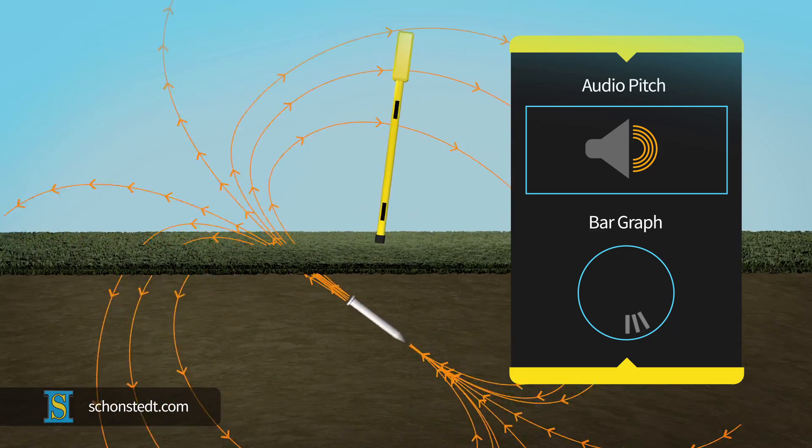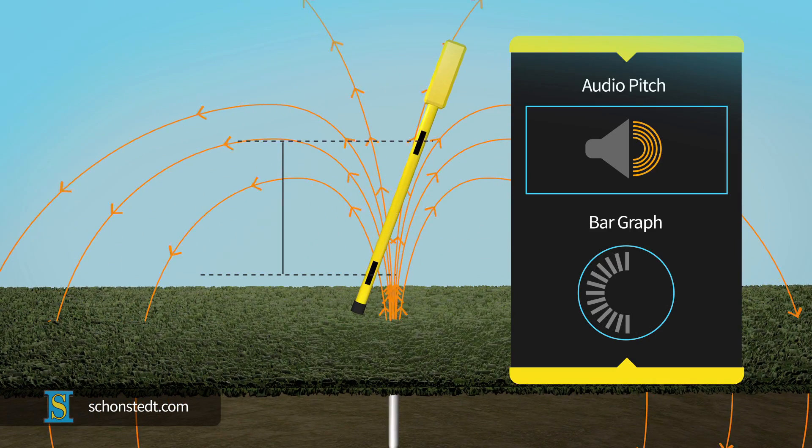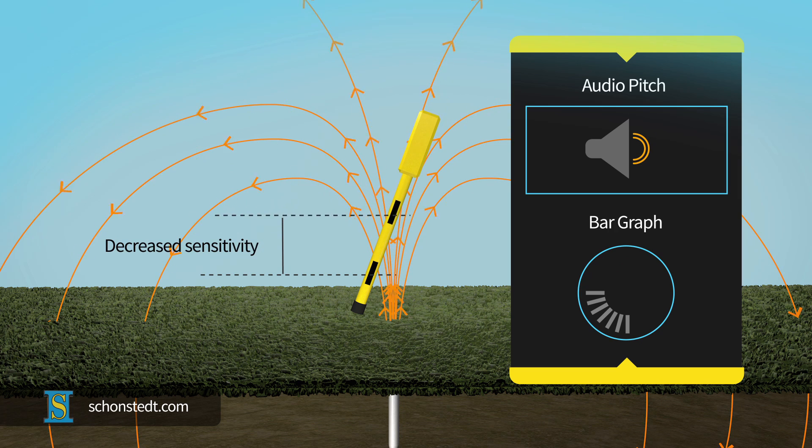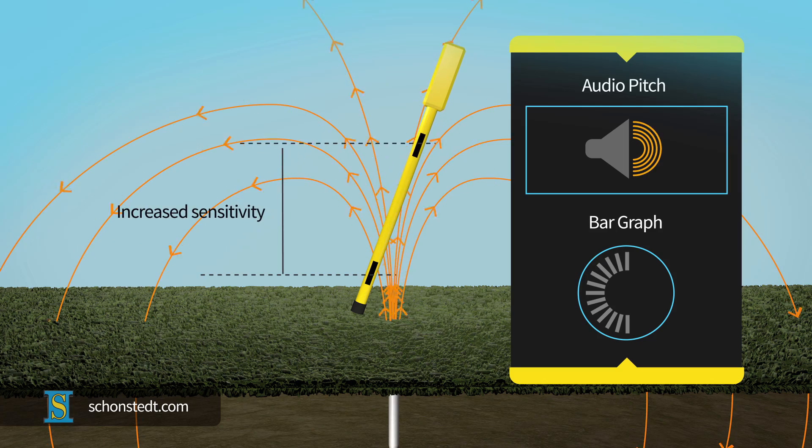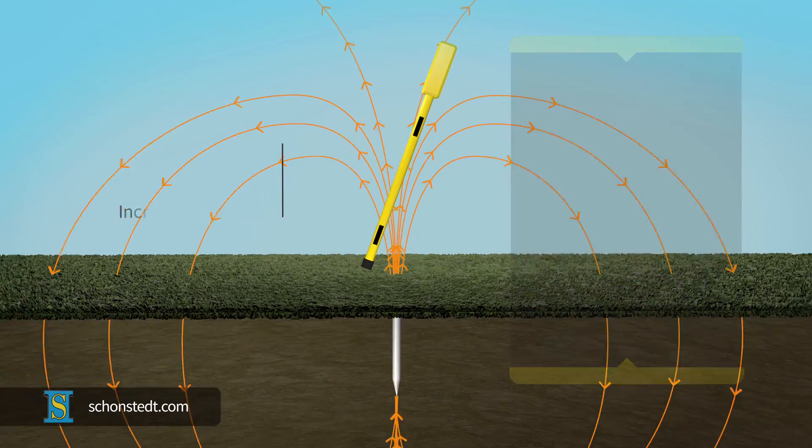The fixed spacing between the sensors determines the overall length of the locator and has an impact on the field difference detected, or the sensitivity of the locator. The further apart the sensors are, the more sensitive the locator is.